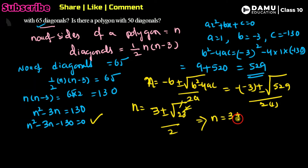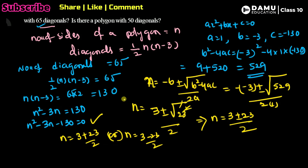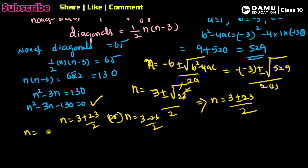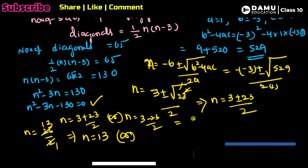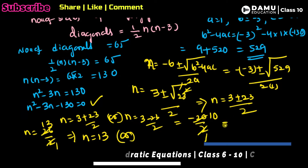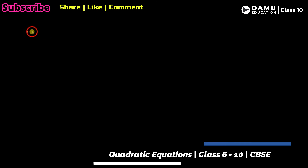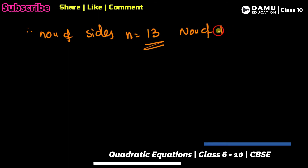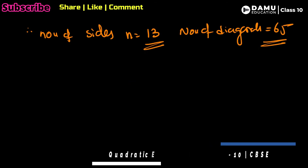So n = (3 + 23) / 2 = 26 / 2 = 13, or n = (3 − 23) / 2 = −20 / 2 = −10. Since the number of sides cannot be negative, we take n = 13. Therefore, the number of sides is 13, giving 65 diagonals.